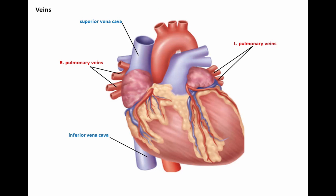Veins of the heart: those transporting deoxygenated blood are the superior and inferior vena cava, draining into the right atrium. The right and left pulmonary veins transport oxygenated blood from the lungs back to the left atrium.